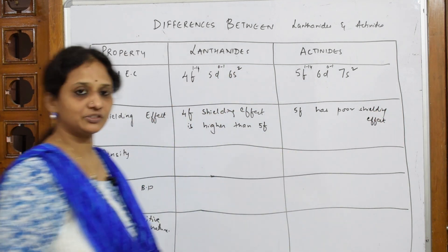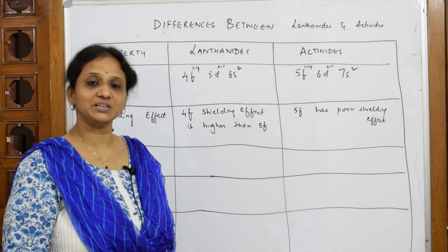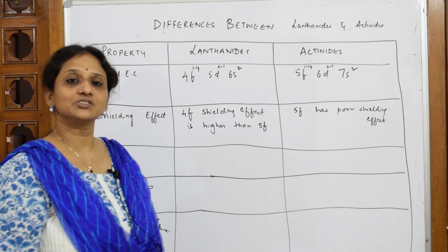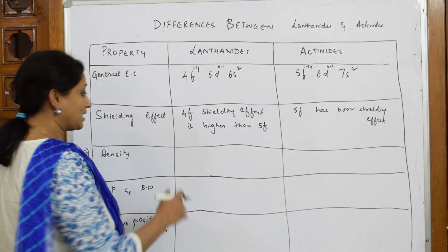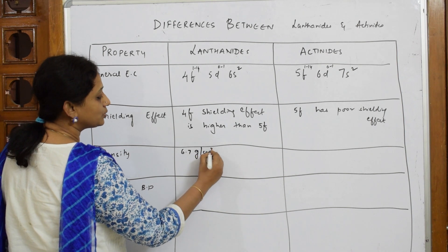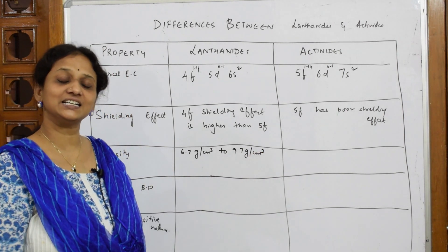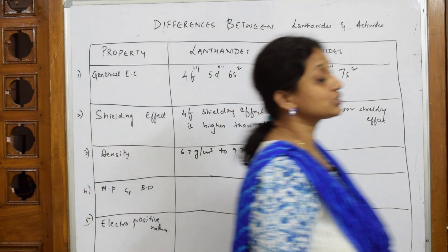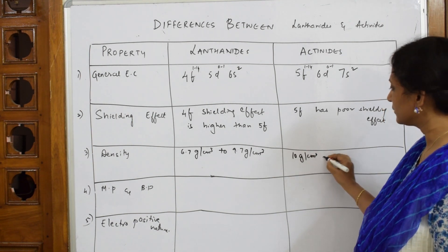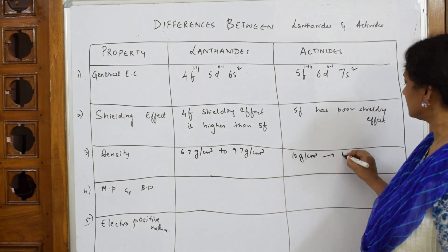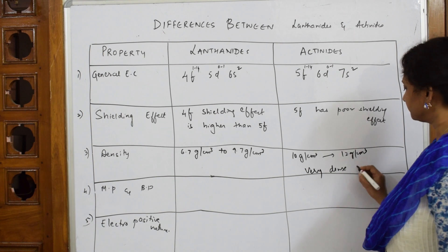For density, measured in grams per centimeter cube, Lanthanides have a density range from 6.7 g/cm³ to 9.7 g/cm³ — they are dense metals. Actinides are even denser, with a density range from 10 g/cm³ to 12 g/cm³, which is why actinides are called very dense metals compared to lanthanides.